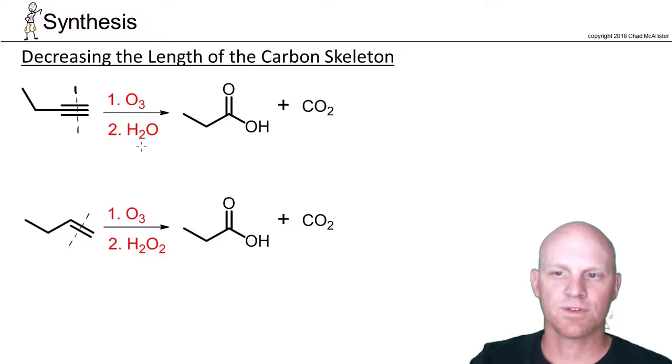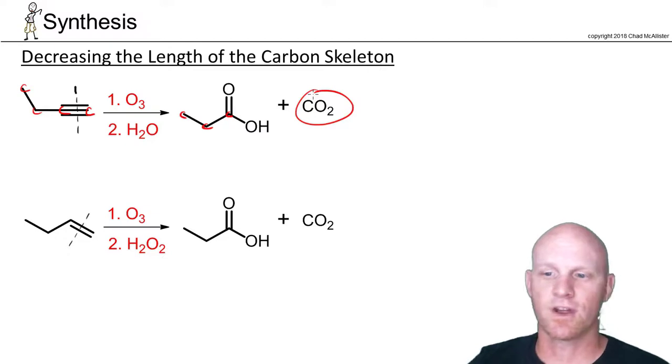With alkynes we generally follow that up with water. In this case you get a one, two, three carbon carboxylic acid on one side. On the other side, as long as it's not terminal, would also be a carboxylic acid. But if this is a terminal alkyne it'll just form CO2 instead and bubble out of the solution.